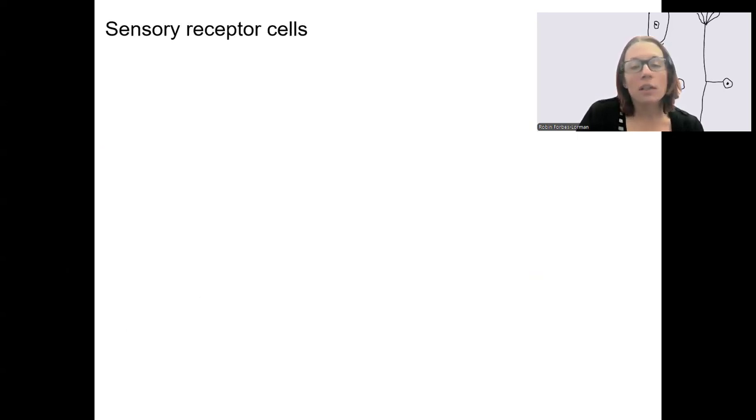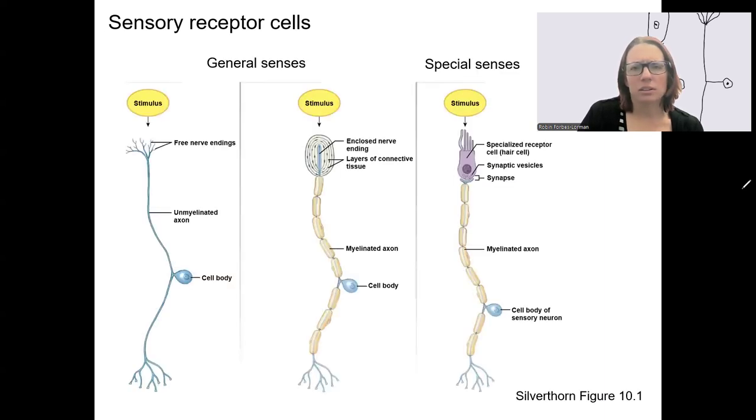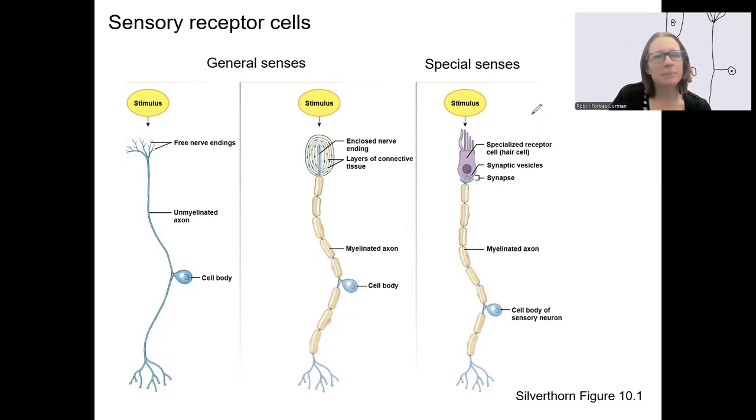Okay. One other type to classify sensory receptor cells is based on their structure. So whether they are encapsulated or simple, basically.